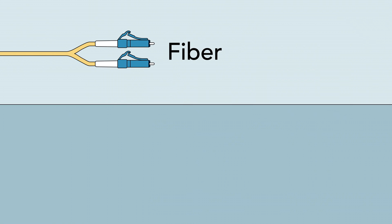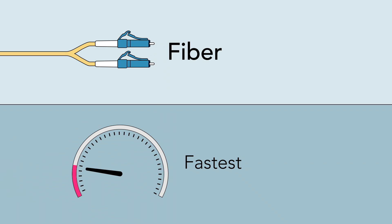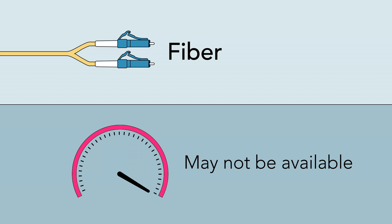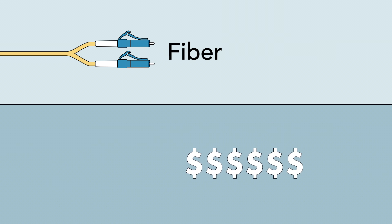Fiber is the fastest type of broadband currently available. Using fiber-optic cables, it can provide speeds that exceed even DSL or cable. However, it may not be available where you live, and it tends to be more expensive.